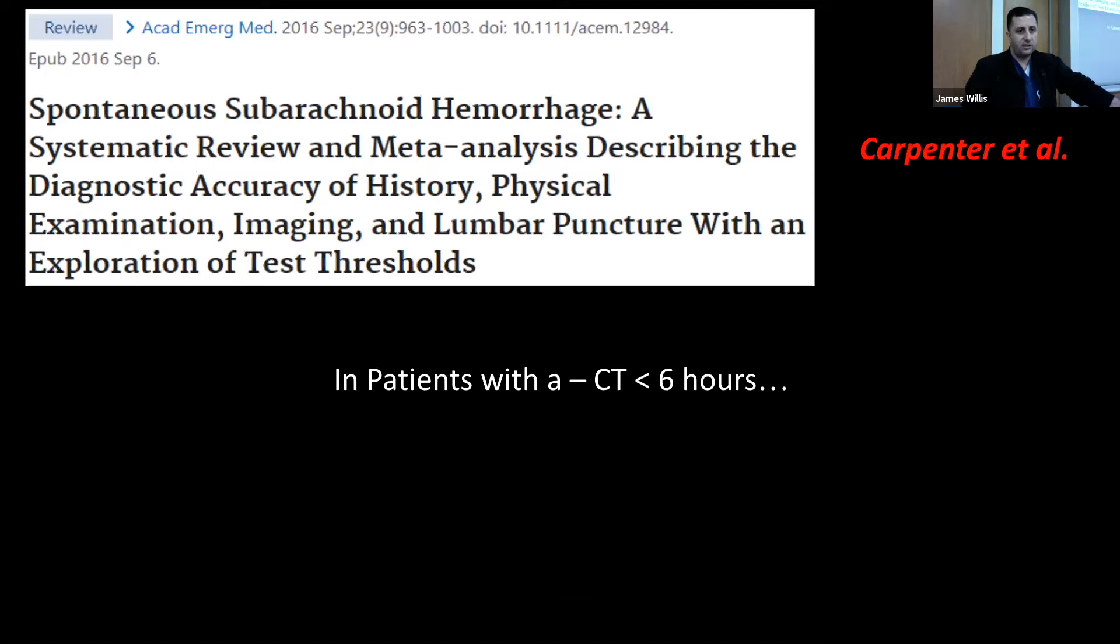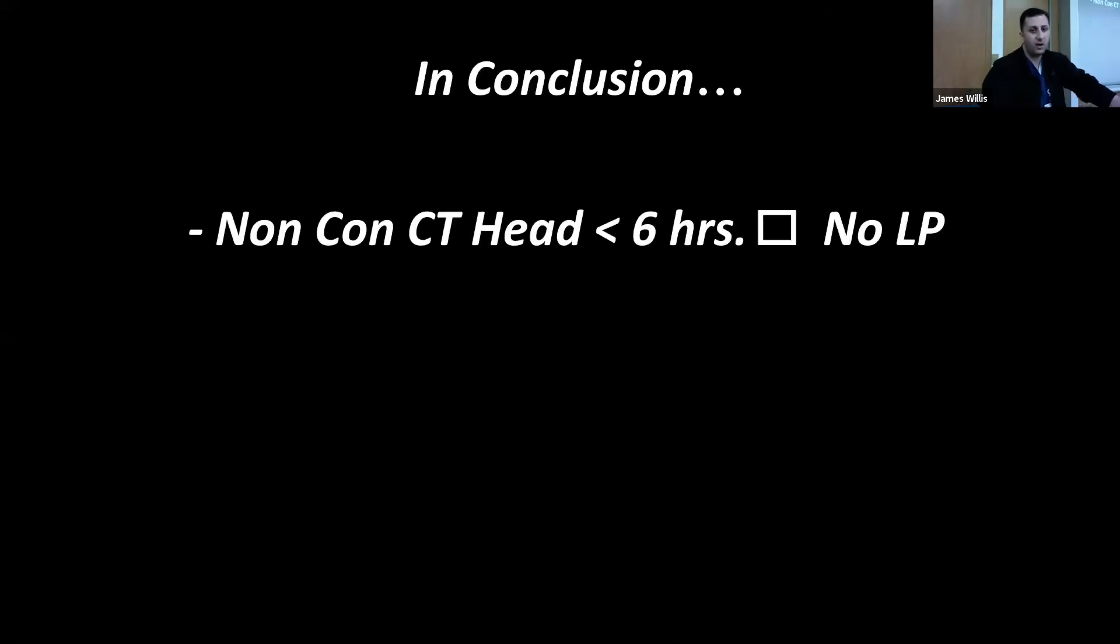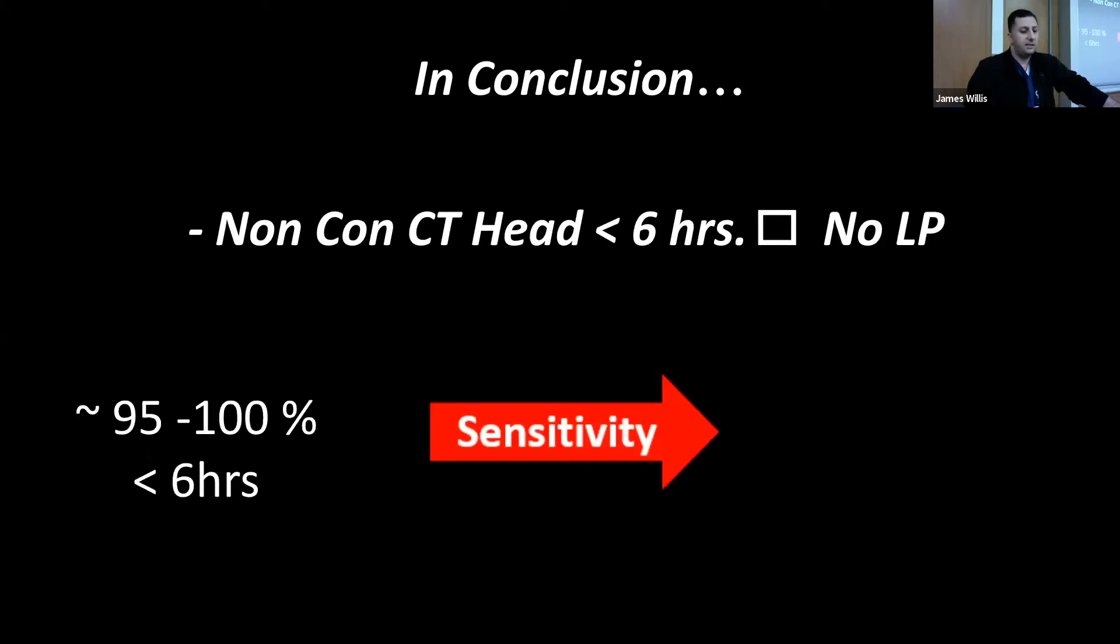From these positive LPs, they ended up having imaging afterwards, and they found eight had a confirmed aneurysmal subarachnoid hemorrhage. So they confirmed a miss-rate of about 0.4%. There were really no clinically significant bleeds, and these eight patients, when they looked back at them, they found that they presented well after that six-hour mark. Once again, this is all just to demonstrate that six-hour mark in the literature continues to be relevant. It continues to be a good time of demarcation of whether or not you need an LP. In conclusion, a non-con CT head within six hours has been demonstrated to be good enough to detect aneurysmal subarachnoid hemorrhage without an LP. The sensitivity is about 95 to 100% depending on which study you want to reference.